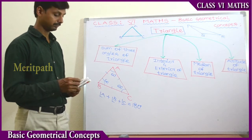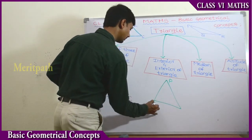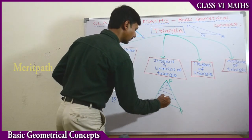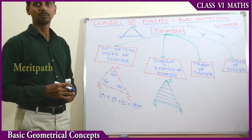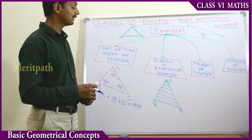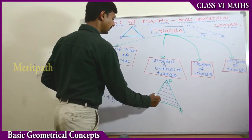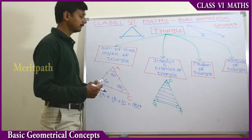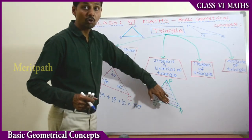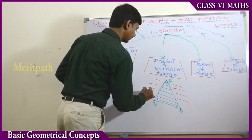The next concept is Interior and Exterior of a Triangle. We draw a triangle PQR. The interior part of triangle PQR — P, Q, and R are the vertices of the triangle. PQ, QR, and PR are the three sides of a triangle. Angles P, Q, and R are the angles. These are the 6 parts of the triangle. The region inside the triangle is called the Interior of the triangle, and the region outside is called the Exterior of the triangle.